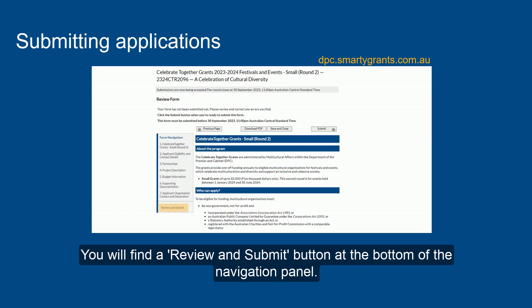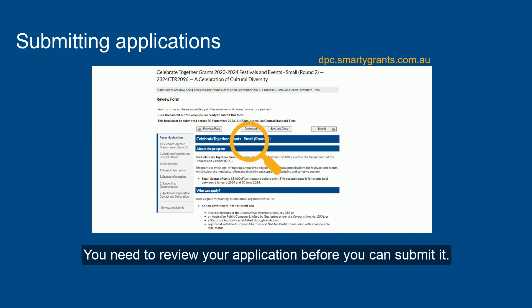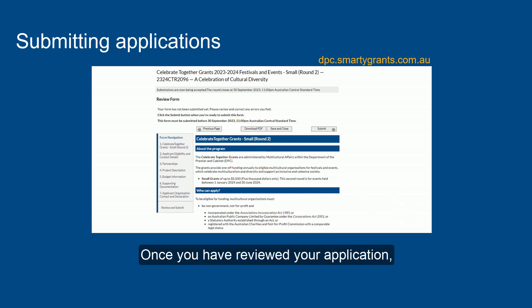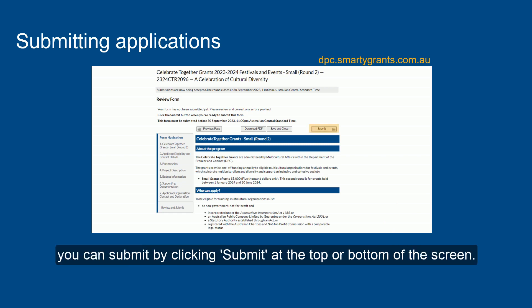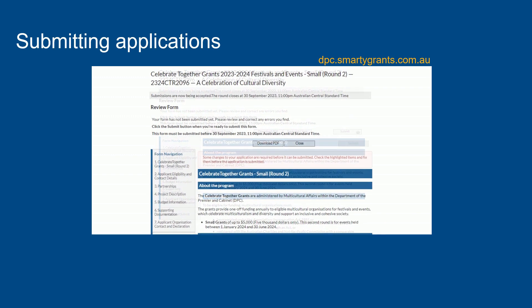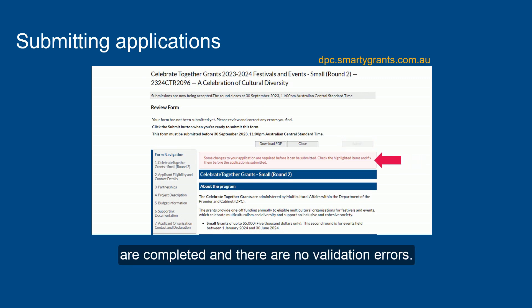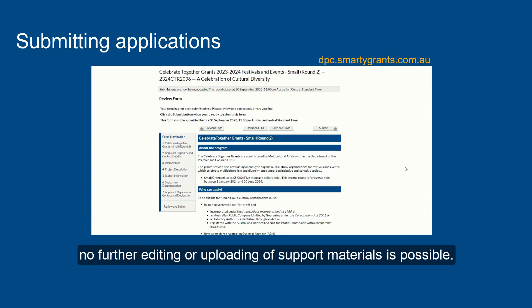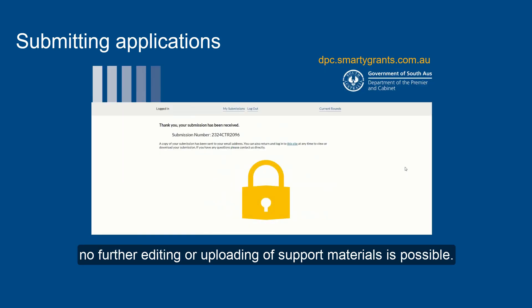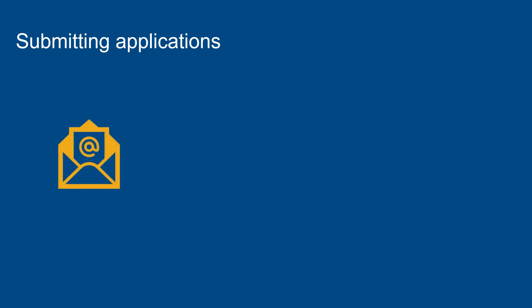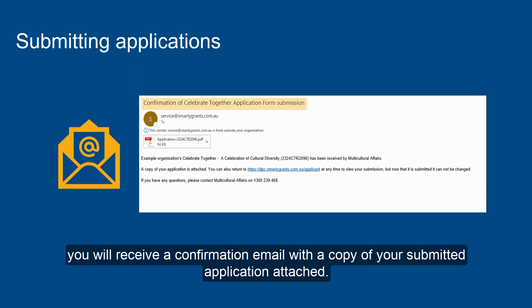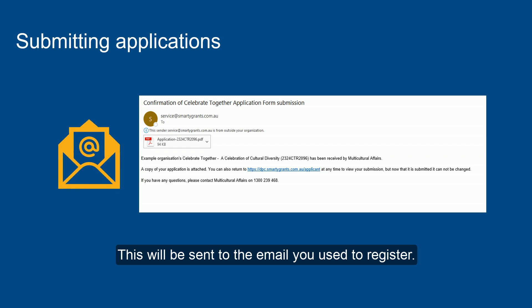You will find a Review and Submit button at the bottom of the navigation panel. You need to review your application before you can submit it. Once reviewed, you can submit by clicking Submit at the top or bottom of the screen. You will not be able to submit your application until all compulsory questions are completed and there are no validation errors. Once submitted, no further editing or uploading of support materials is possible. When you submit your application, you will receive a confirmation email with a copy of your submitted application attached, sent to the email you used to register.